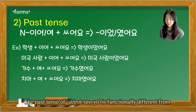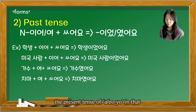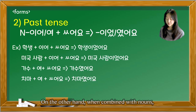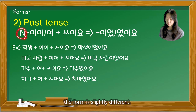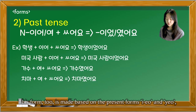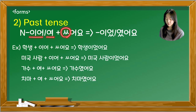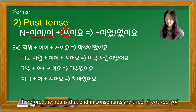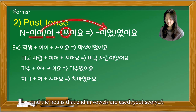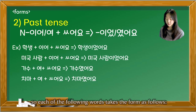The past tense 았었어요 is functionally different from the present 아어요 in that it is always used only as a statement or question. When combined with nouns, the form is slightly different — it is based on the present forms 이어 and 여 combined with nouns, and then the past form is added. So nouns ending in consonants use 이었어요, and nouns ending in vowels also use 이었어요.